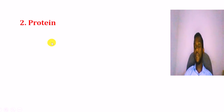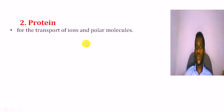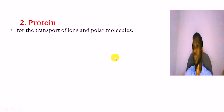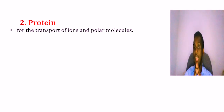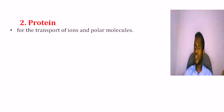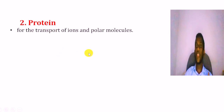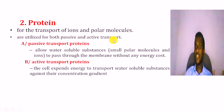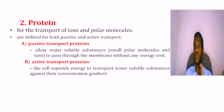The cell membrane also contains proteins. These proteins are important for the transport of ions or polar molecules, which are large in size and carry charges. The proteins found on cell membranes are important for both passive and active transport.